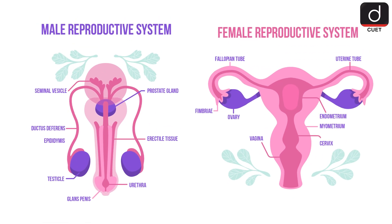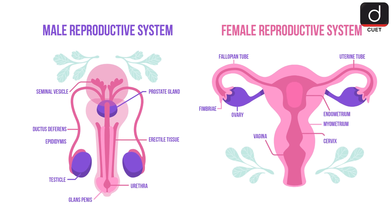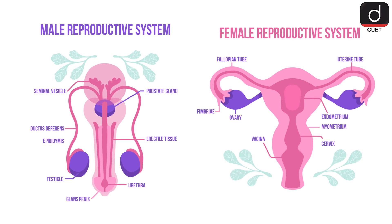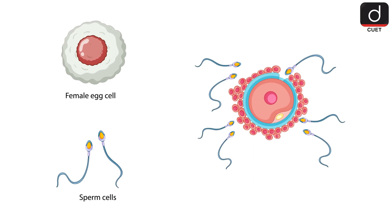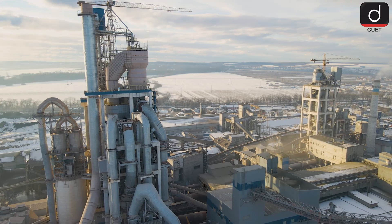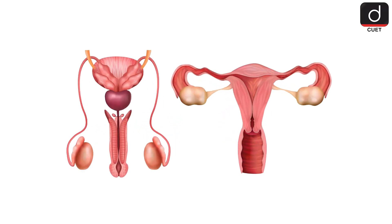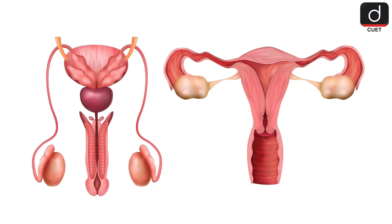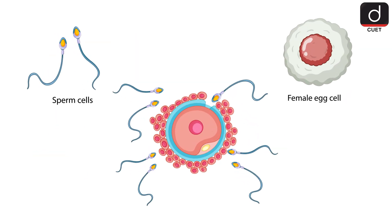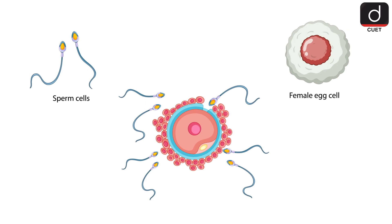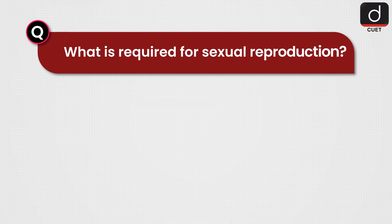Sexual reproduction involves specialized organs in males and females. Males have testes that produce sperm, and females have ovaries that produce eggs. These organs play a crucial role in creating the gametes needed for reproduction. It's like a factory where the male and female each produce their own special product — the reproductive organs ensure that sperm and eggs are of high quality and ready to combine and create something new.